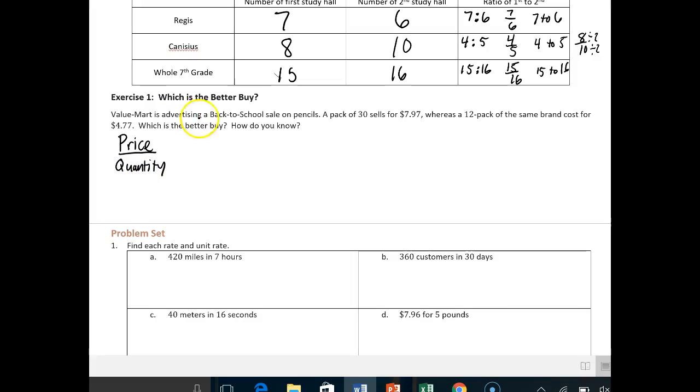So Value Mart is advertising a back-to-school sale on pencils. A pack of 30 sells for $7.97, whereas a 12-pack of the same brand costs $4.77, which is a better buy? How do you know? And so basically we're going to compare these two. So we're going to have the 30-pack versus the 12-pack.